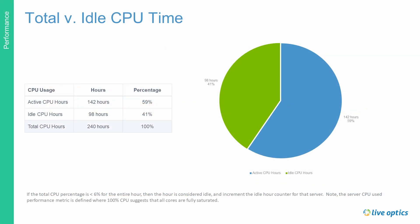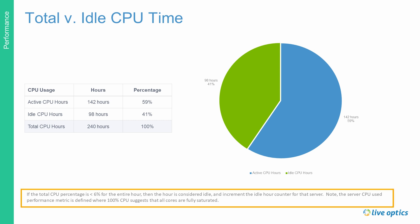The AIR Report also shares information on total versus idle CPU time. If the total CPU percentage is less than 6% for the entire hour, then the hour is considered idle, and increments the idle hour counter for that server. Note: the server CPU used performance metric is defined where 100% CPU suggests that all cores are fully saturated.